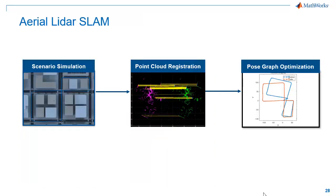Coming back to our Aerial LiDAR SLAM. Our workflow starts with simulating the city environment with a UAV in it. After that, we'll register point clouds based on feature descriptors extracted from each point cloud. Finally, we'll implement Pose Graph Optimization to correct the drifts that happened in the registration step and build the complete map.